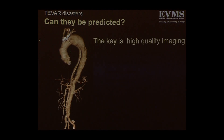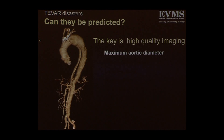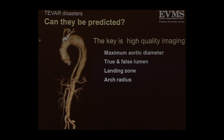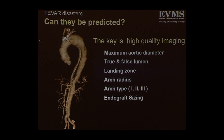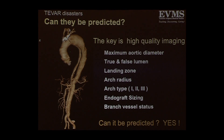To answer the first question — can they be predicted? Yes. The key is high-quality imaging; that's very essential. You need to be very careful about your maximum aortic diameter that you want to treat. You need to know your true and false lumen, define the landing zone, know the arch radius, and the type of arch. If you're dealing with a type 3 arch, it's a much different animal to treat. Endograft sizing is key. Branch vessel status is important. If you have good quality imaging and read it properly, yes, they can be predicted.